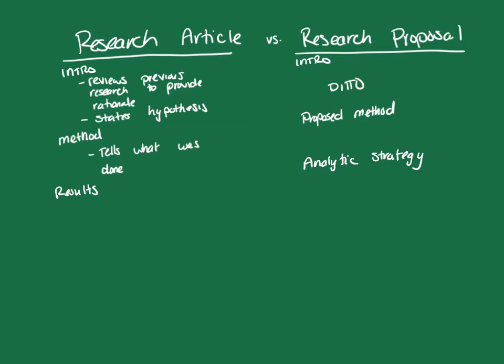In the analytic strategy, we state what tests we will use to analyze the data — that is, what we're going to do statistically to assess whether the hypothesis was supported or refuted. A results section is written in past tense and tells what was found, but in a research proposal the analytic strategy is written in future tense, stating what we will do with the data we propose collecting.